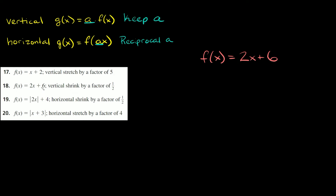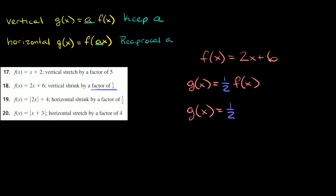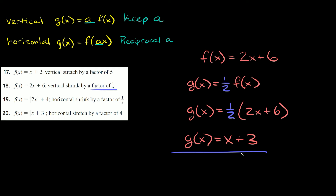Number 18: f of x equals 2x plus six. This one's a vertical shrink by a factor of one-half. For a vertical stretch or shrink, just multiply your whole function by that factor. So g of x equals one-half times 2x plus six, which gives g of x equals x plus three.